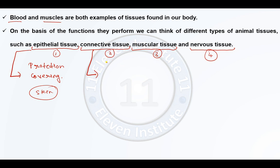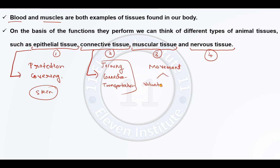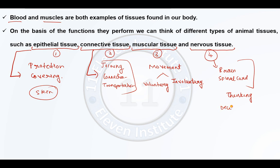Secondly, we have connective tissue, and their main function will be joining the body as a whole — to provide a network system inside the body. Connection and transportation will be their function. Muscular tissues are definitely responsible for movement, which is of two types: voluntary and involuntary. And the last one is nervous tissue — parts of the body like the brain and spinal cord, where thinking and decision-making are involved, are made up of nervous tissues.